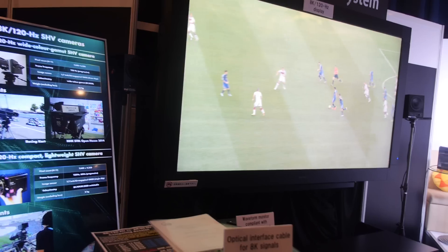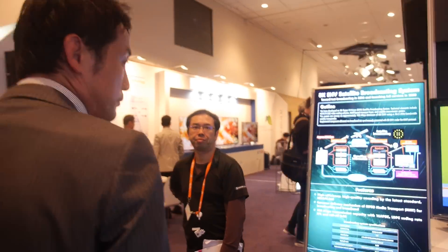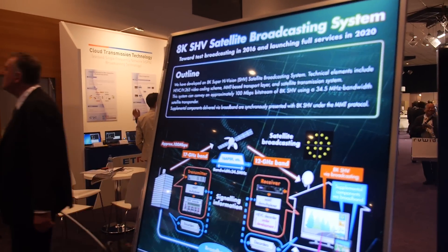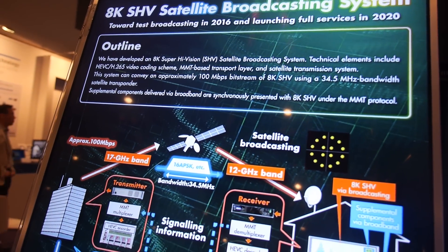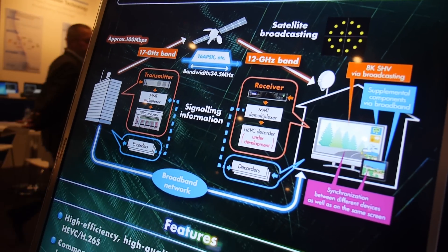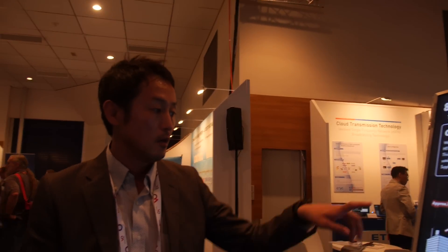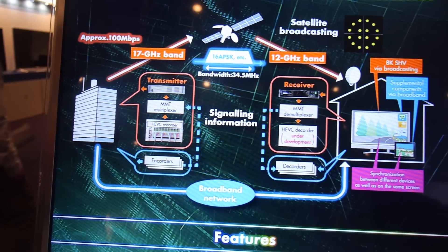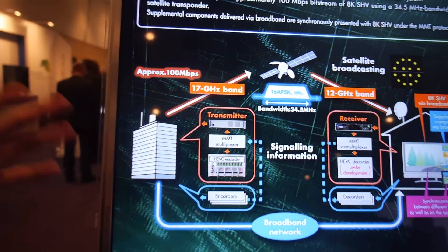As for the timeline, NHK plans to launch test broadcasting in 8K in 2016, and in 2020 they will launch a full 8K broadcasting service using satellite. They will use the next-generation encoder HEVC, compressing the 8K signal down to 100 megabits per second so everyone can receive it.